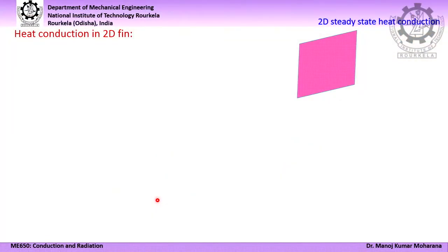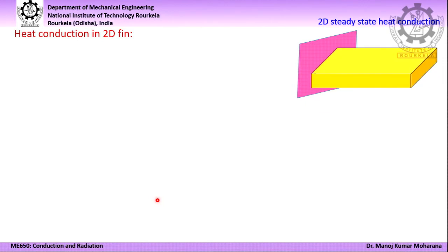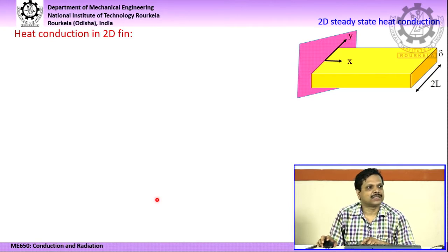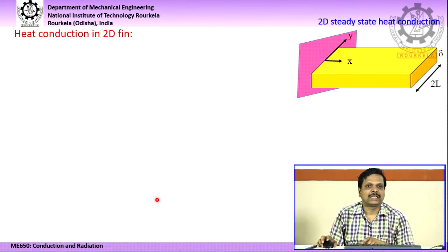Suppose you have a surface which is at a relatively higher temperature. To this surface, we will attach one extended surface of the shape shown here in the diagram. The thickness of this fin is delta, and the width of this fin is 2L. If you closely observe, there exists symmetry on this diagram — the symmetry will be about the width of this fin. You can take L on one side and L on the other side.